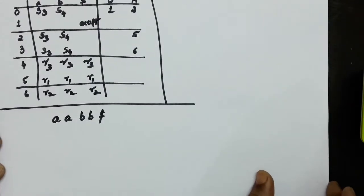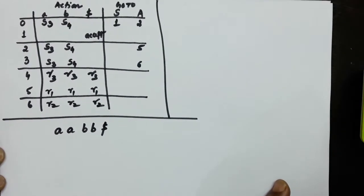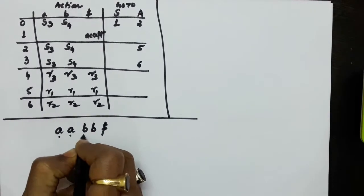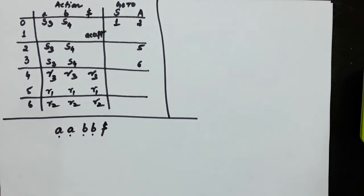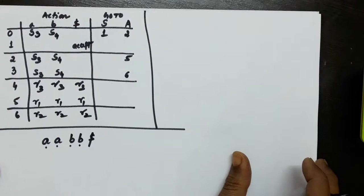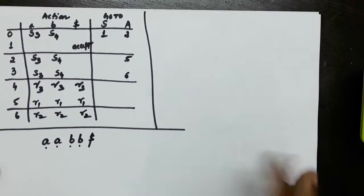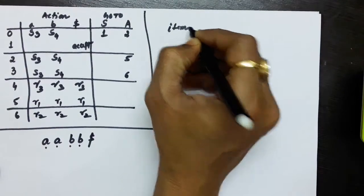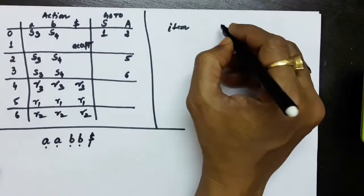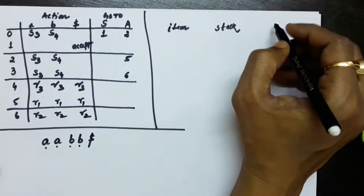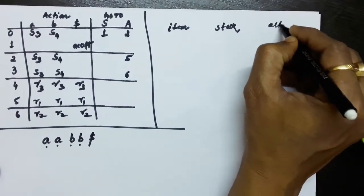In this lecture, we will try to find out how parsing is done for the input string. The input string we have is a, a, b, b and dollar. We have to parse this string using the LR0 parser. For doing the LR0 parsing, we are making a table with: the item, the stack in which the symbols will be, and the action we are going to take.